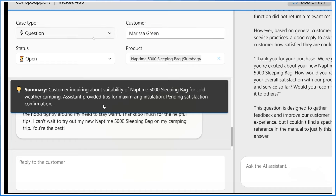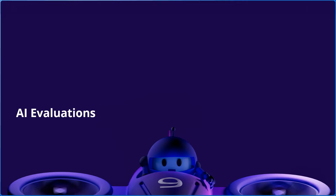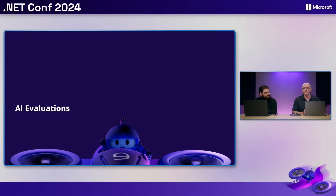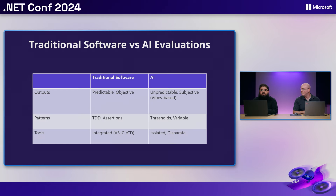It comes back saying it may have made an error and that it was based on general practices, not the manual. How do you deal with situations where the model isn't consistent? That is where evaluations come in. Luis takes over: those were convincing answers, but unfortunately the model was providing ungrounded responses. As software developers, that's a challenge — we want to feel confident in what we're shipping and trust the software we're putting out there.